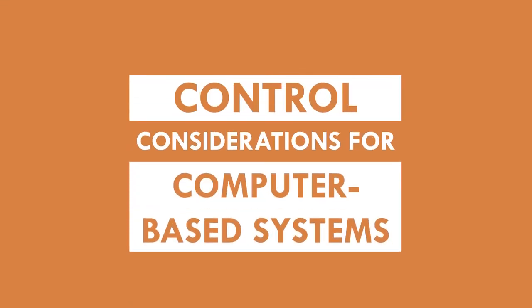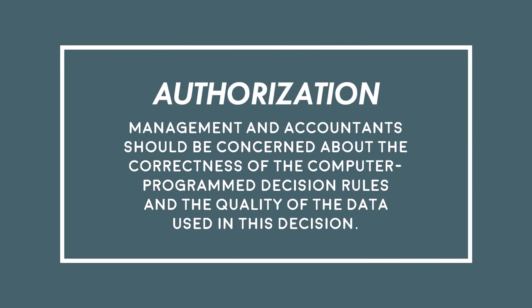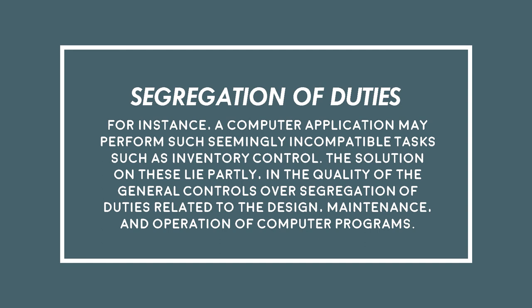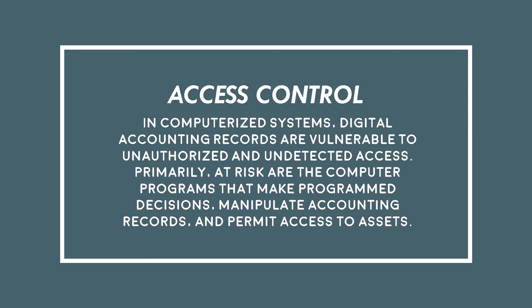Control considerations for computer-based systems. First, authorization: management and accountants should be concerned about the correctness of the computer program decision rules and the quality of the data used in decisions. For segregation of duties, a computer application may perform seemingly incompatible tasks such as inventory control. The solution lies partly in the quality of general controls over segregation of duties related to the design, maintenance, and operation of computer programs. Next, access control: in computerized systems, digital accounting records are vulnerable to unauthorized and undetected access. Primarily at risk are the computer programs that make program decisions, manipulate accounting records, and permit access to assets.